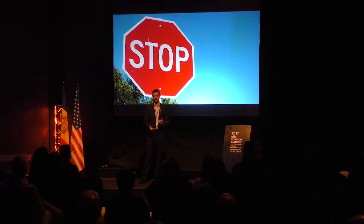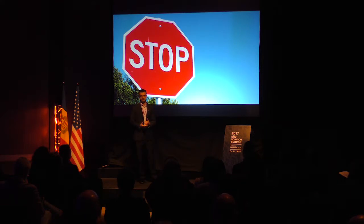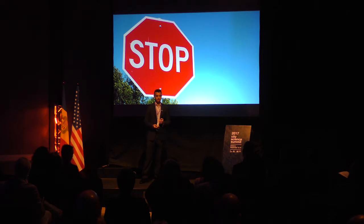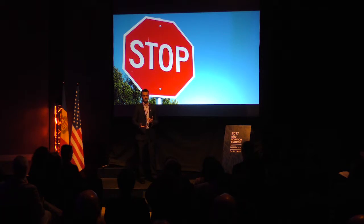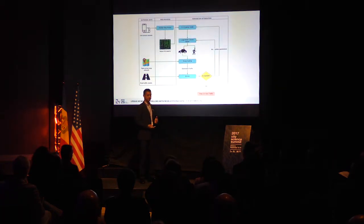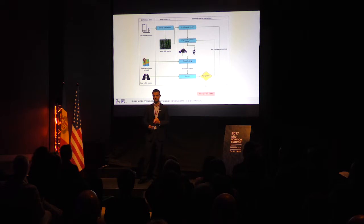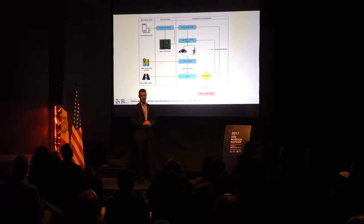For example, this data doesn't represent all people all the time — it's really a sample of people. You also don't know how many people are driving versus using other modes of transportation, and it doesn't tell you whether there are multiple people in one vehicle. So I needed some way to correct for these biases. My solution was to start with an OD matrix developed directly from the telecom data, then use traffic data from a small number of junctions as ground truths to progressively update the OD matrix until the traffic estimates from the model match the traffic data.